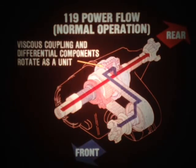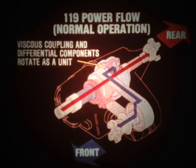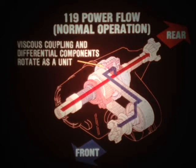Here's how the case functions when the vehicle is driven straight ahead on a surface providing good traction to all wheels. The drive torque flows from the input shaft to the viscous coupling and differential assembly. All of the viscous coupling and differential components rotate as a unit because no turns are being negotiated and traction conditions are equal at both drive axles. Equal drive torque is supplied to both drive axles.